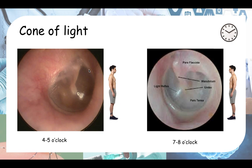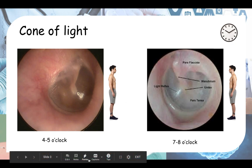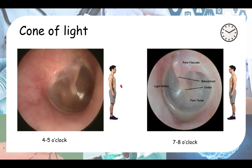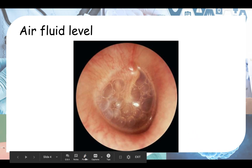First, we'll be talking about the cone of light in the correct anatomical position. Depending on the right or left ear: if you're looking at the patient's right ear, the cone of light will be at the four o'clock to five o'clock position, whereas if you are looking at their left ear, the cone of light will be in the seven o'clock to eight o'clock position. It is pointing anterior-inferior to the direction the person is facing.